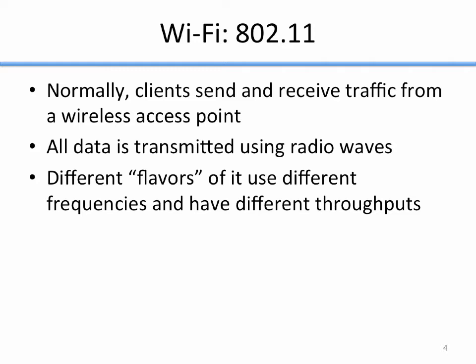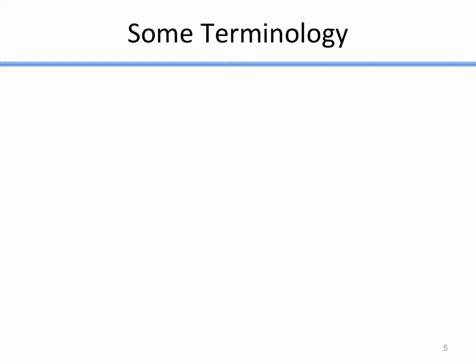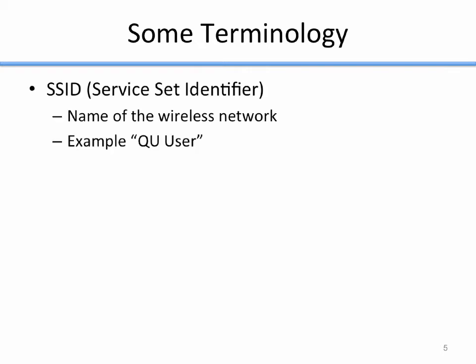There are different flavors of 802.11 that use different frequencies and have different throughputs. Now let's talk about some terminology. First is the SSID, which stands for Service Set Identifier — it's just the name of the wireless network. Here at QU, one of our wireless networks is named 'QU user.' When you click the wireless icon on your machine, the names that show up are the SSIDs for each network.